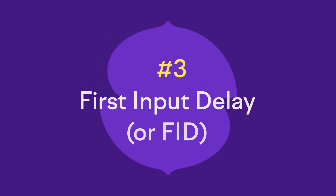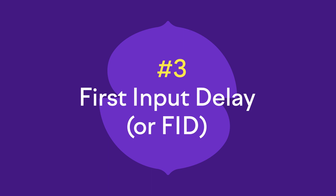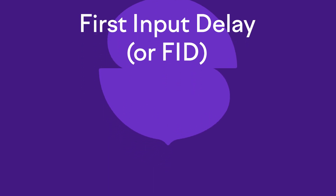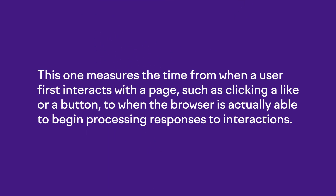And the third one is First Input Delay, also known as FID. This one measures the time from when a user first interacts with a page — such as clicking a link or a button — to when the browser is actually able to begin processing responses to those interactions. You know, like when you click a button and nothing happens, and then finally the page starts to load and the button works. That's what FID measures.